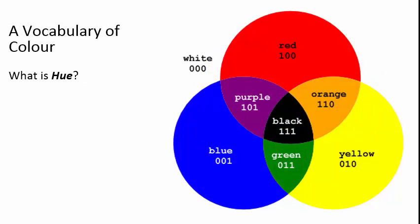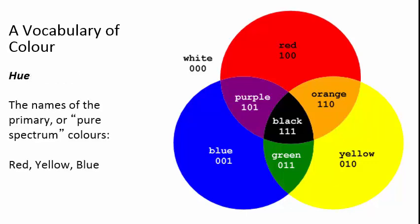Let's go over the basic vocabulary of color. What is hue? Hue is what we think of as the colors red, yellow, blue, purple and so on — straightforward color. These are what we call the primary or pure spectrum colors: red, yellow, and blue.